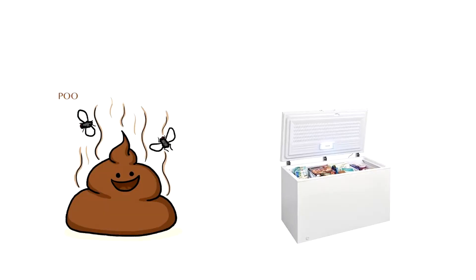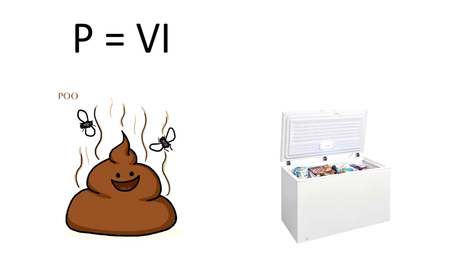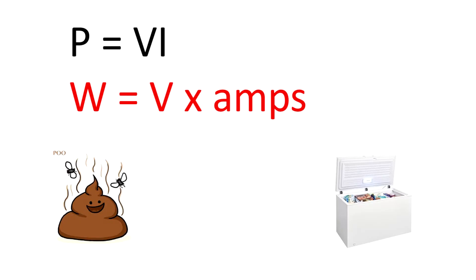Equation number two. What I like to do is take a big steaming poo and put it in the freezer. I like my poo to be very icy. And if my poo is very icy, that reminds me that P equals VI — power equals voltage times current. Remember the unit of power is the watt.